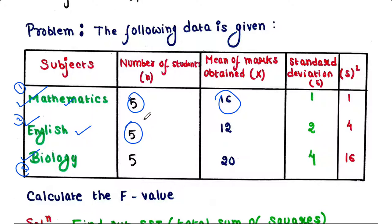five students who qualified English exam, and mean of the marks that they obtained in English is 12. This is the third group where we have again five students who qualified biology exam, and mean of the marks that they obtained in biology is 20. Standard deviation of each group is also provided in this table. Now the question is: whether the means of these three groups are similar or different?